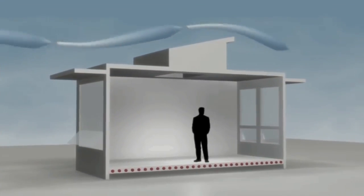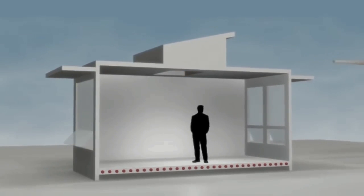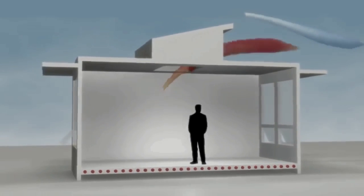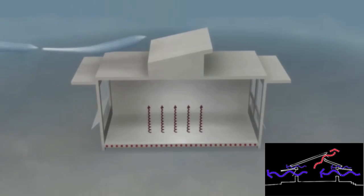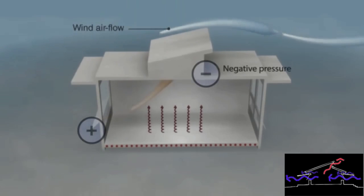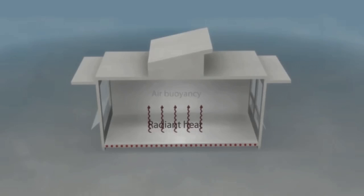Natural ventilation is the technique of using natural air movement from the outside and drawing it inside without the aid of a mechanical ventilation system. In this cross ventilation example, the negative pressure difference caused by the predominant wind direction airflow sucks the warm, stale air out of the high level opening, aided by the air buoyancy effect resulting from the upward rising radiant heat in the space.